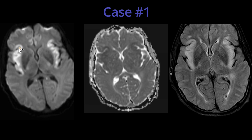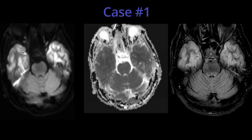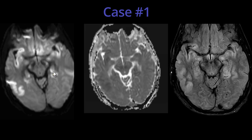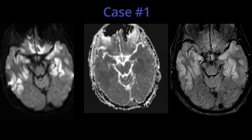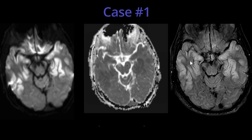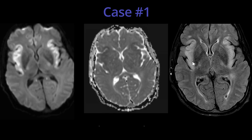In this first case, we see abnormal restricted diffusion involving bilateral insula, as well as bilateral temporal lobes and bilateral hippocampi. All these areas showed associated abnormal T2/FLAIR hyperintensity, as shown here in the temporal lobes and the insula.